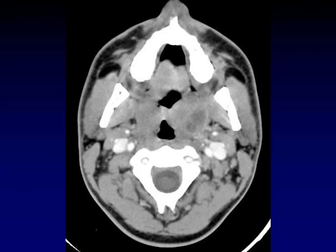The first thing to consider in the lateral pharyngeal space is infection. Here is the classic appearance: a mass with predominantly low density centrally and a rim of enhancement. Look what it's doing to the parapharyngeal fat — it's pushing it out laterally, maybe a little bit posteriorly. Notice its relationship to the palatine tonsil: it is deep to that tonsil, between the tonsil and the parapharyngeal fat. This is the peritonsillar space, and this is where peritonsillar abscesses arise.